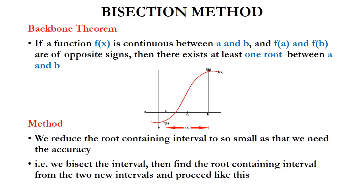Here we are going to find the root of a function using the bisection method, which is one of the simplest methods in numerical methods. The backbone theorem behind bisection is: if a function f(x) is continuous between points a and b, and f(a) and f(b) are of opposite signs — f(a) is negative and f(b) is positive — then there exists at least one root between a and b.